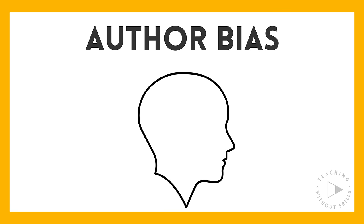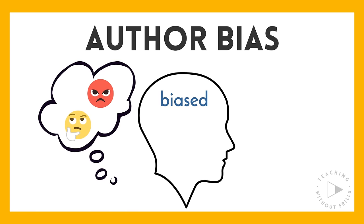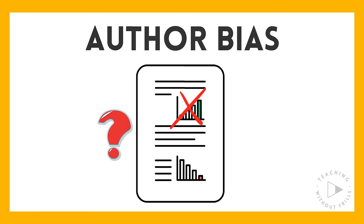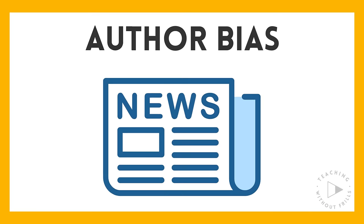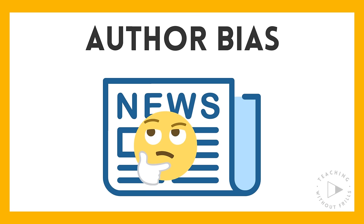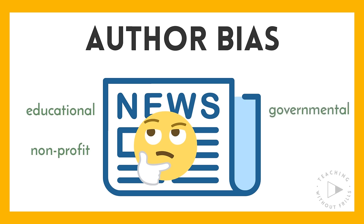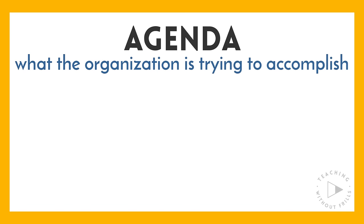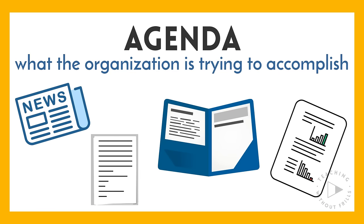Some authors and organizations may be biased. This means the author has such strong feelings or beliefs about a topic, they might ignore conflicting evidence. A biased source may present information that is inaccurate, incomplete, or one-sided in order to persuade the audience to feel a certain way. Sometimes authors may even disguise their writing as informative while actually trying to influence the reader's opinion. Even educational, non-profit, governmental, and news organizations can seem reliable but may have an underlying agenda. An agenda is what the organization is trying to accomplish. It's important to recognize the agenda of an organization and seek a variety of sources on the same topic to find the objective truth.